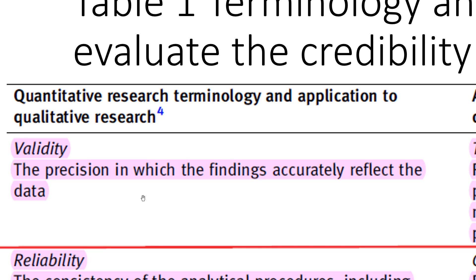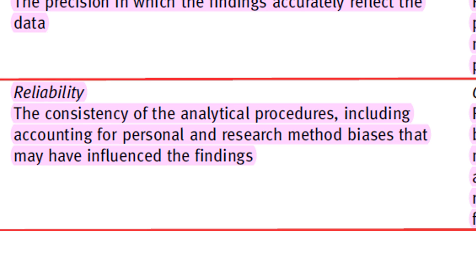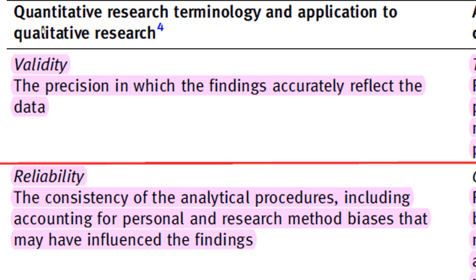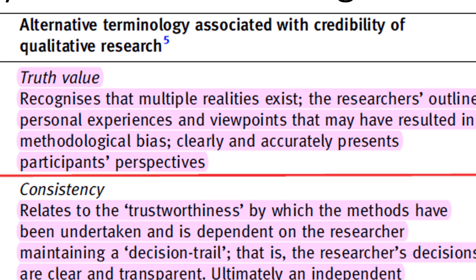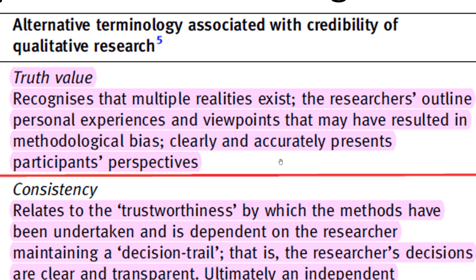In terms of validity — this is quantitative — validity is about the precision with which findings accurately reflect the data. Reliability is the consistency of the analytical procedures, including accounting for personal and research method biases that may have influenced the findings. In quantitative research, subjectivity is to be avoided; everything has to be objective, and the researcher must not get in the way of findings.